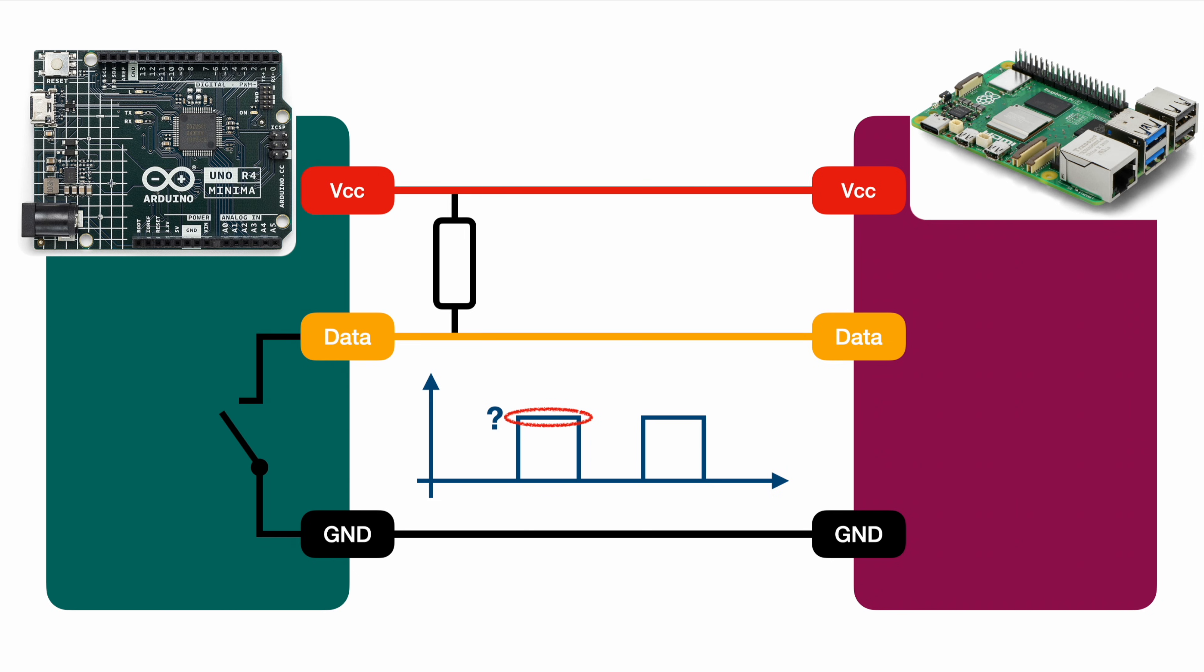Anyway, this is it. You learned what is a pull-up and pull-down resistor, you learned how to use them, when you need them and why you need them. I hope you liked it and please make sure to subscribe to the channel to make sure to learn more about electronics and IoT. In the meantime, thanks for watching and see you next time.